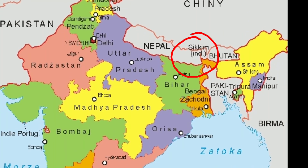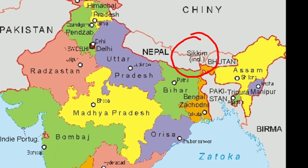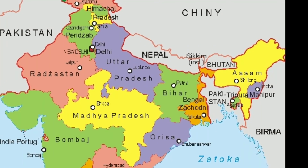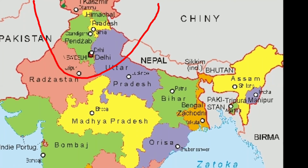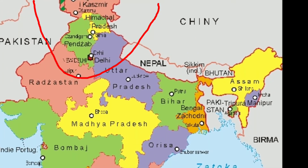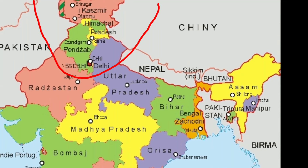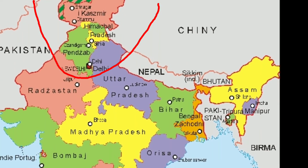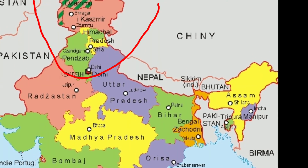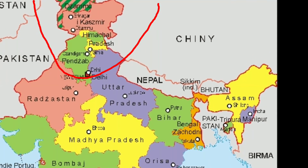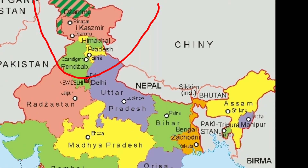Sikkim remained a princely state not yet included in India. In the north, the Union Territories of Delhi and Himachal Pradesh, and the states of Punjab and Jammu Kashmir.